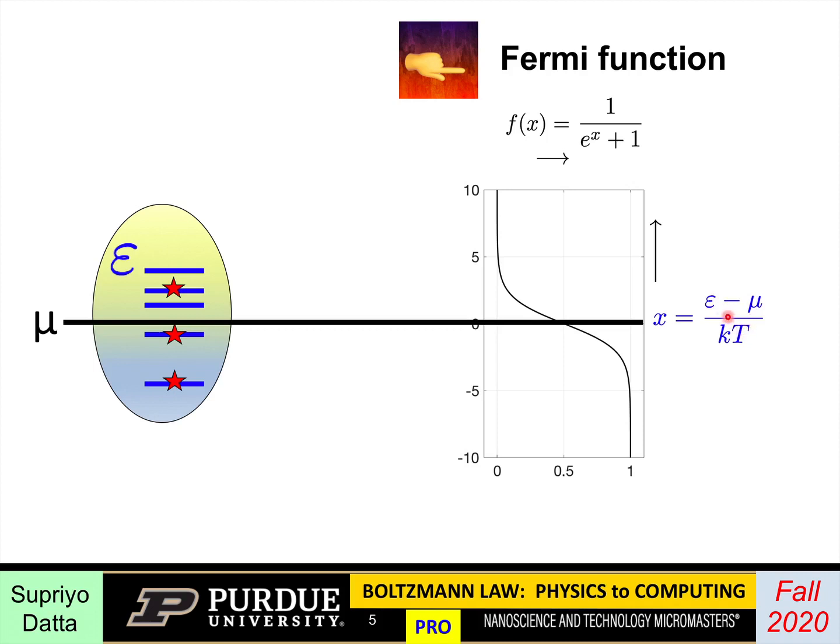You normalize it to the thermal energy kT. K is this Boltzmann's constant, and T is the absolute temperature. This dimensionless quantity, x, is what enters the Fermi function. The Fermi function is a number between 0 and 1, an analog number, somewhere in there, which tells you the probability that the state is occupied.